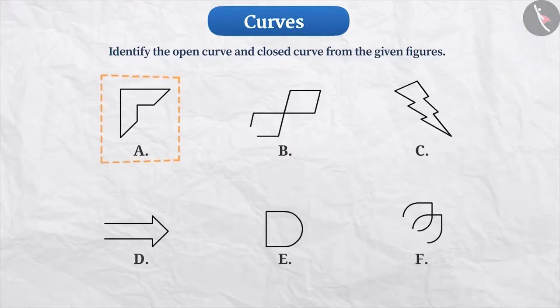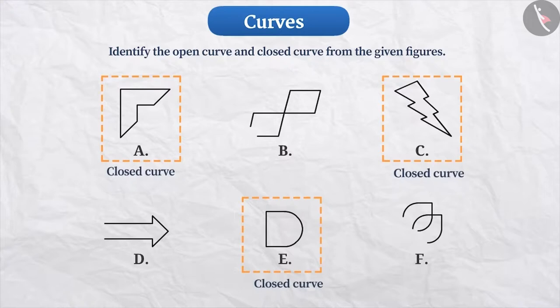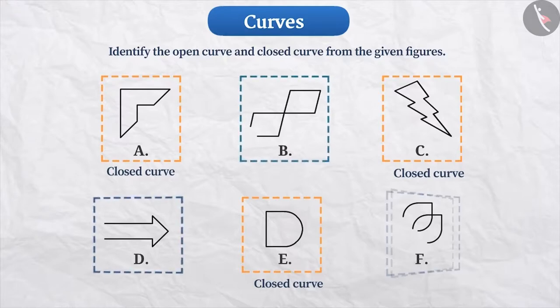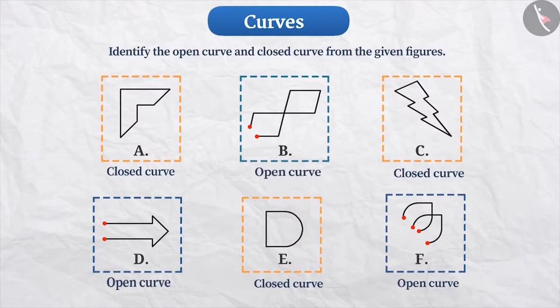Here, curves A, C and E are closed curves as the ends of these curves are joined. However, if we see the figures B, D and F, their ends don't meet. Therefore, all of these curves are open curves.